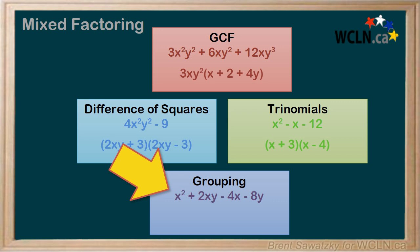For example, in this polynomial, we notice that we can pull an x out of the first two terms, and a negative four out of the second two terms. And when we do, we recognize that we have x plus 2y in each of these new terms. And therefore, we can pull that out to the front, and we have x plus 2y times x minus four.